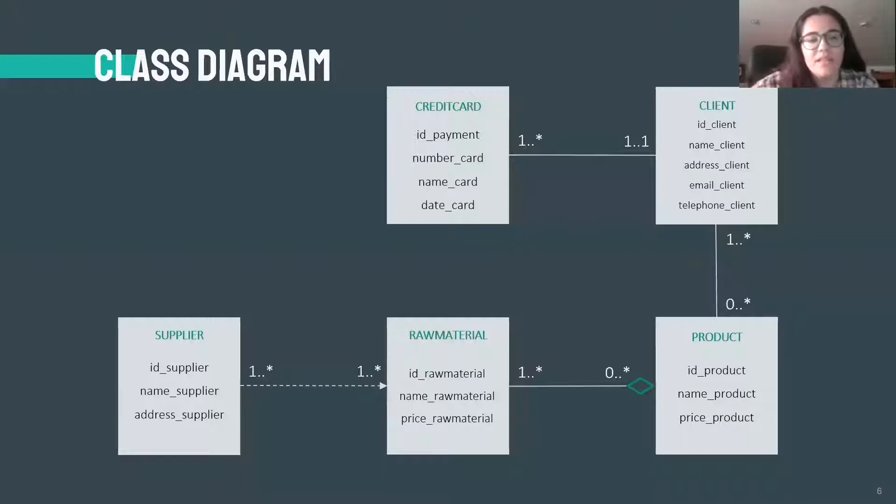The cardinality in the diagram helps in understanding how many objects of each class take part in the relationship. This means that one supplier must deliver at least one raw material but can deliver many and one raw material has to be delivered by at least one supplier but it can be delivered by many.